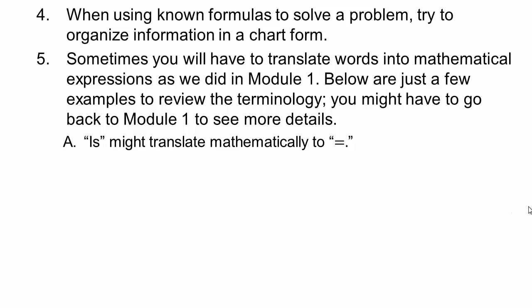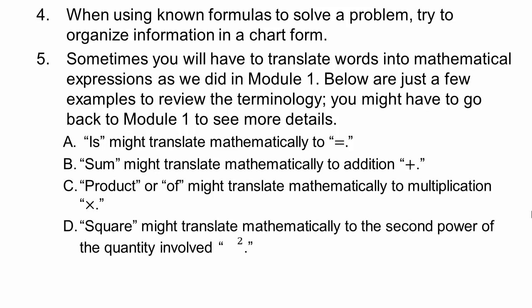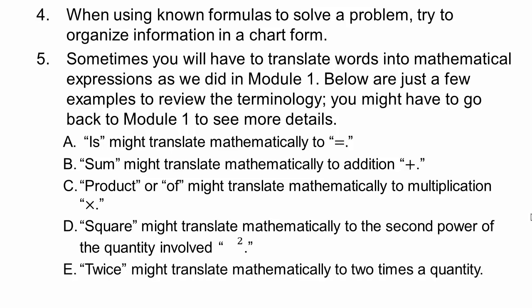Let's review some of that here. So, 'is' translates mathematically to equal sign, 'sum' translates to addition, 'product' is multiplication, 'square' means to the power of 2, 'twice' means 2 times.